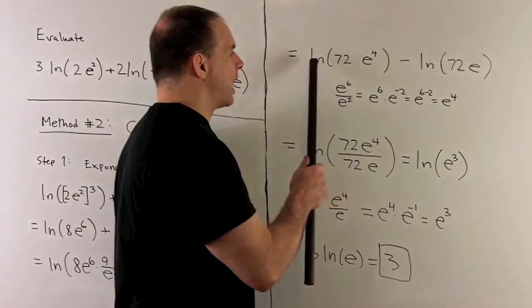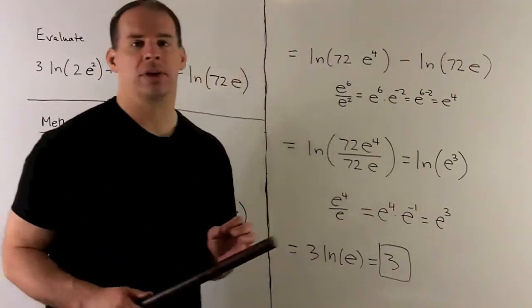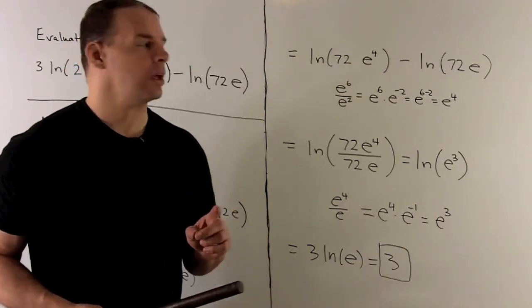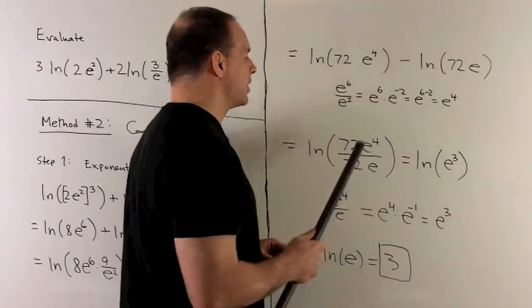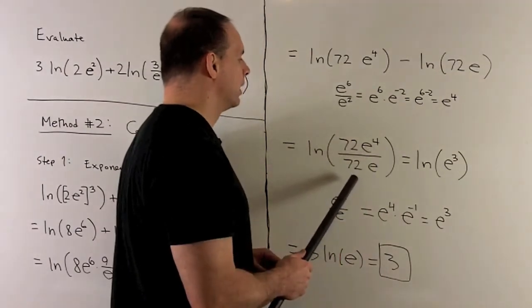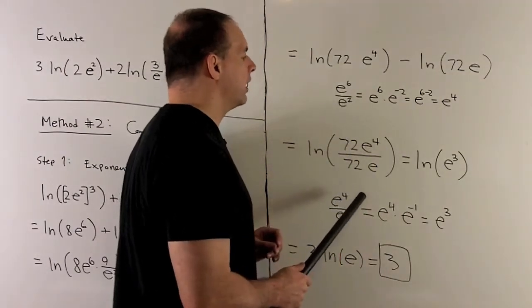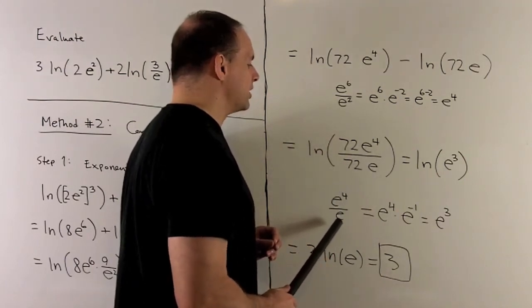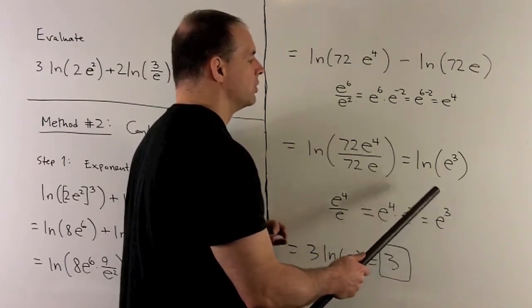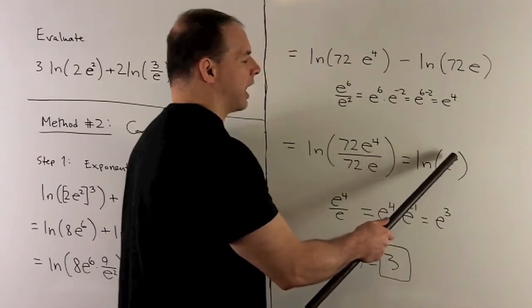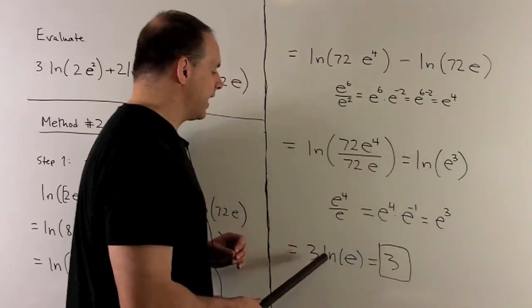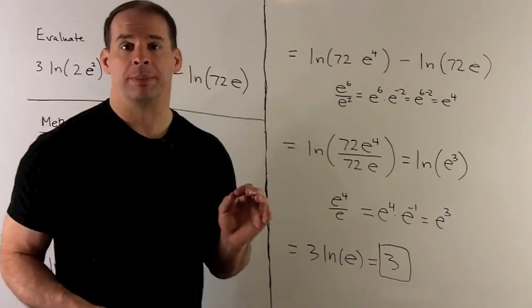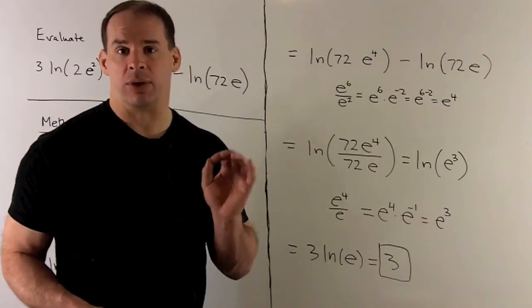We now have natural log of 72e to the 4th minus natural log of 72e. Applying the quotient rule, we combine as a quotient: the 72s cancel, and we're left with e to the 4th over e, which gives e cubed. So we have natural log of e cubed. Bringing the exponent to the front and using natural log of e equals 1, we get 3 — confirming our answer from Method 1.